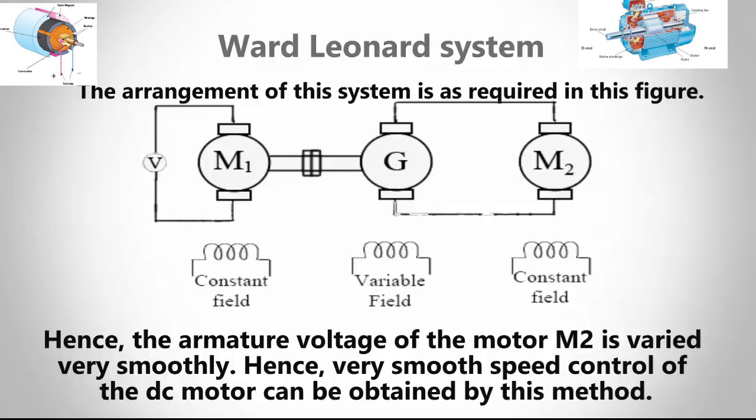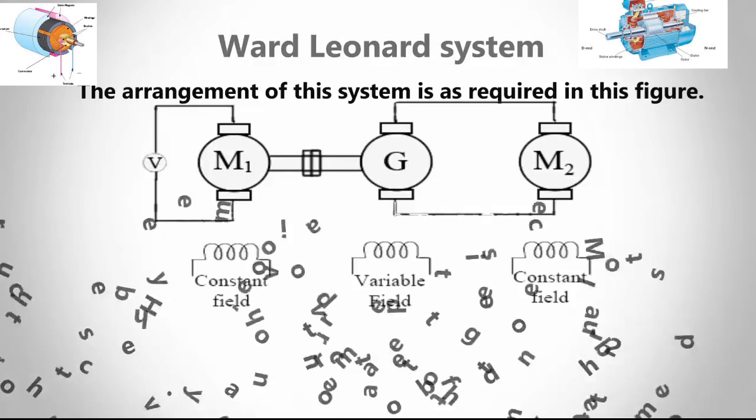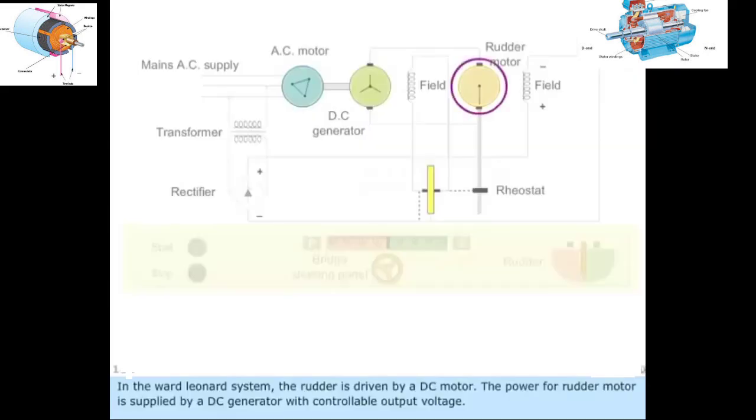In the Ward Leonard system, the rudder is driven by a DC motor. The power for the rudder motor is supplied by a DC generator with controllable output voltage.